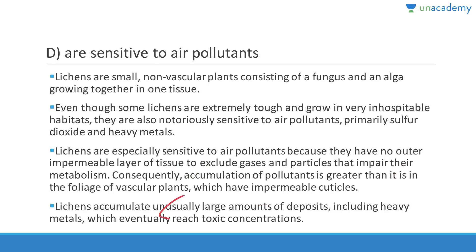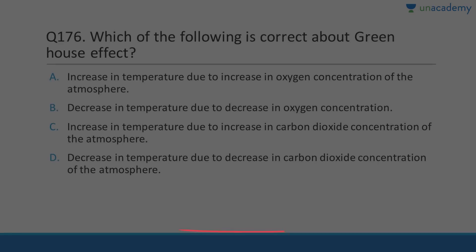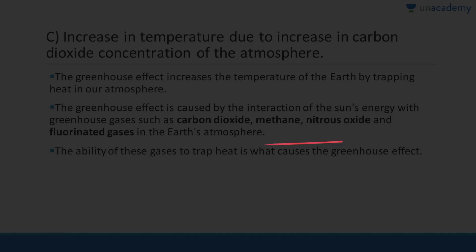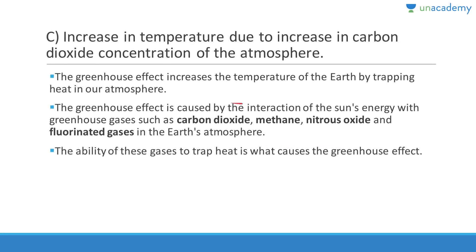Lichens accumulate unusually large amounts of deposits including heavy metals, which eventually reach toxic concentrations. The greenhouse effect is an increase in temperature due to increase in the carbon dioxide concentration of the atmosphere. The greenhouse effect increases Earth's temperature by trapping heat; it is caused by the interaction of the sun's energy with greenhouse gases — CO2, methane, nitrous oxide, and fluorinated gases — which trap heat in the atmosphere.